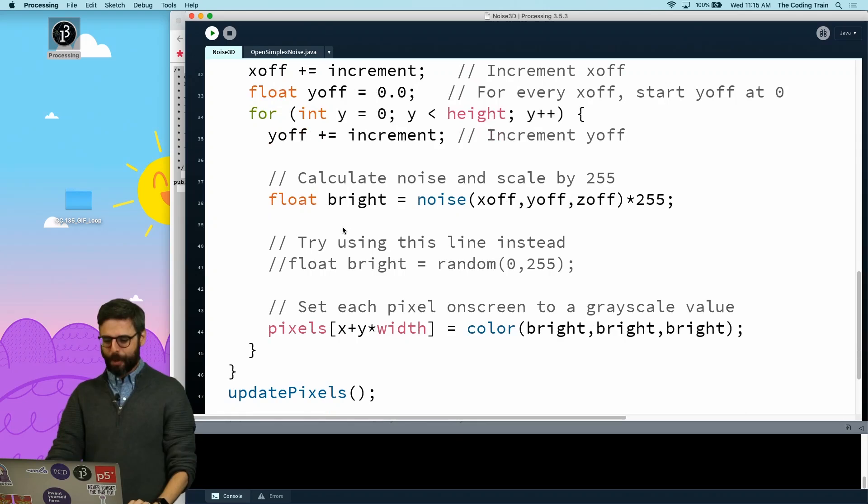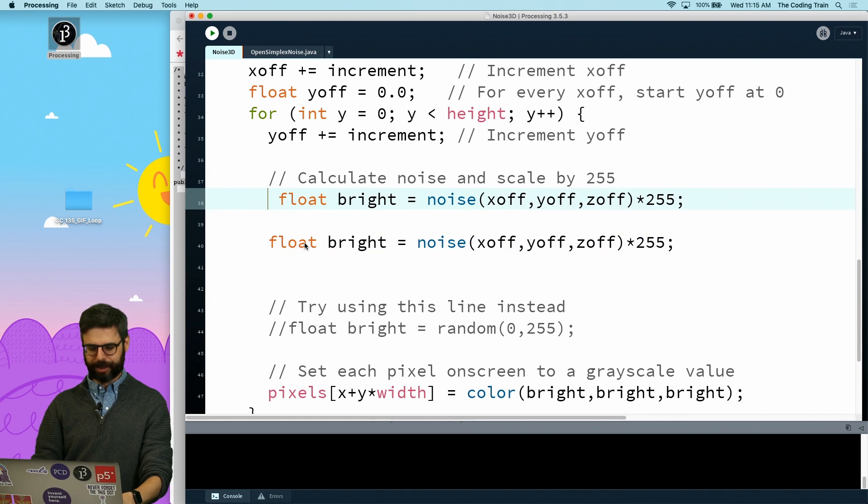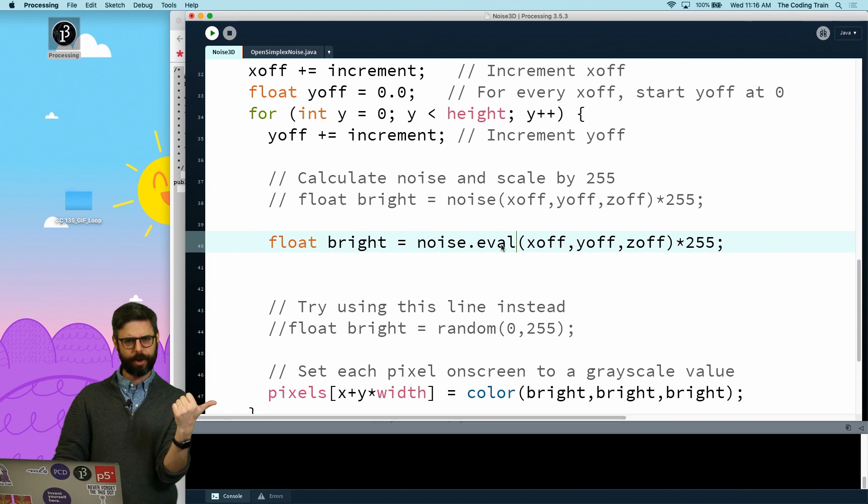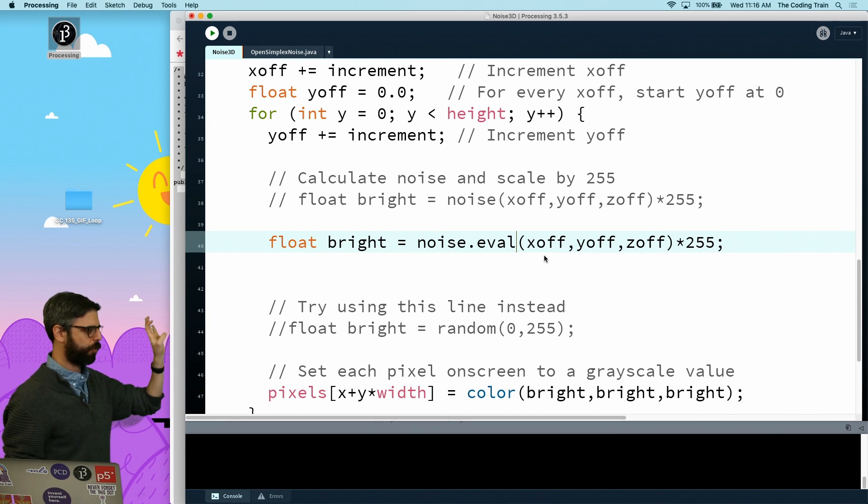It's running. Now it's running the current noise algorithm, the noise function in Processing. Now, we're getting close. What I'm going to do now is just change this. Let me comment this out. And instead, what I'm going to do is I'm now going to say noise dot eval. So that noise object has an eval function. Then I give it the arguments for 3D noise, x offset, y offset, and z offset. And I'm now using the library's noise function instead of the built-in noise function. Let's run this. I'm going to get errors.